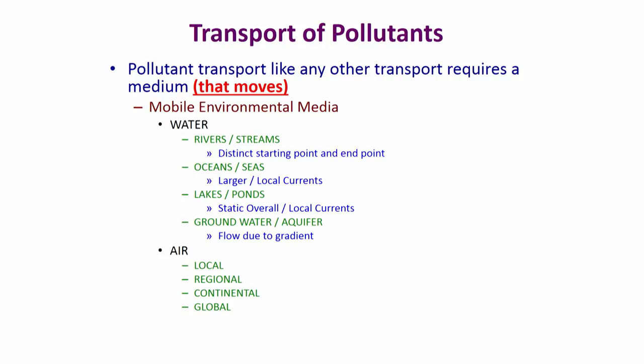Transport of any chemical or pollutant, like any other transport, requires a medium that moves. In the environment there are only two mediums that move: water and air. We will take a brief look at these two environmental media — water and air — to see how much they move and how they can influence the transport of pollutants in the environment.